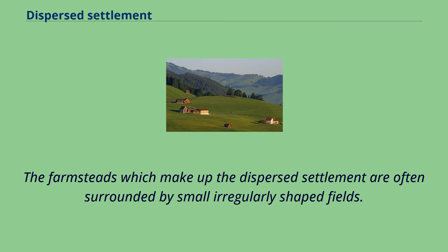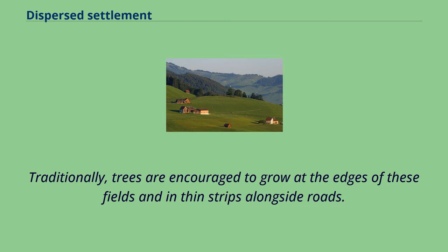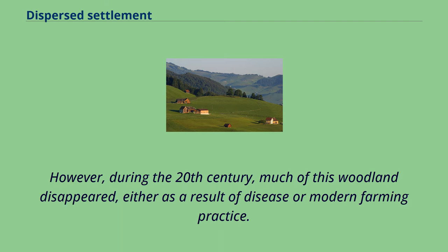The farmsteads which make up the dispersed settlement are often surrounded by small and regularly shaped fields. Traditionally, trees are encouraged to grow at the edges of these fields and in thin strips alongside roads. However, during the 20th century, much of this woodland disappeared, either as a result of disease or modern farming practice.